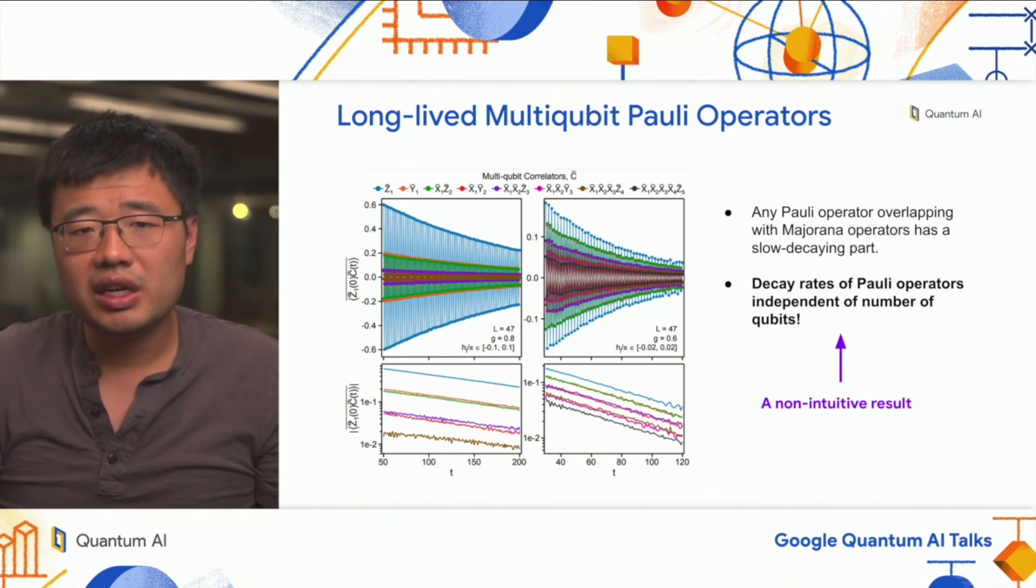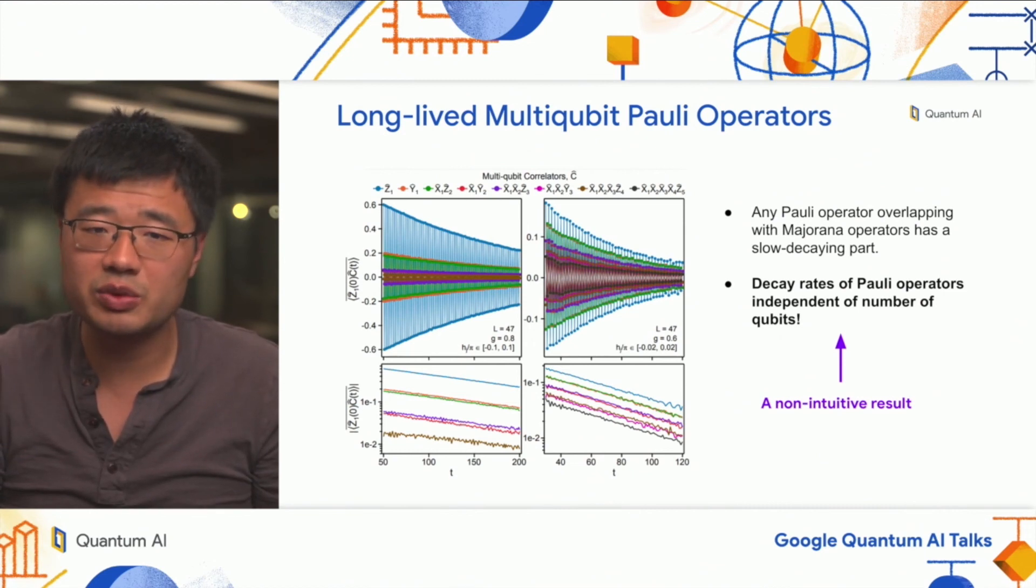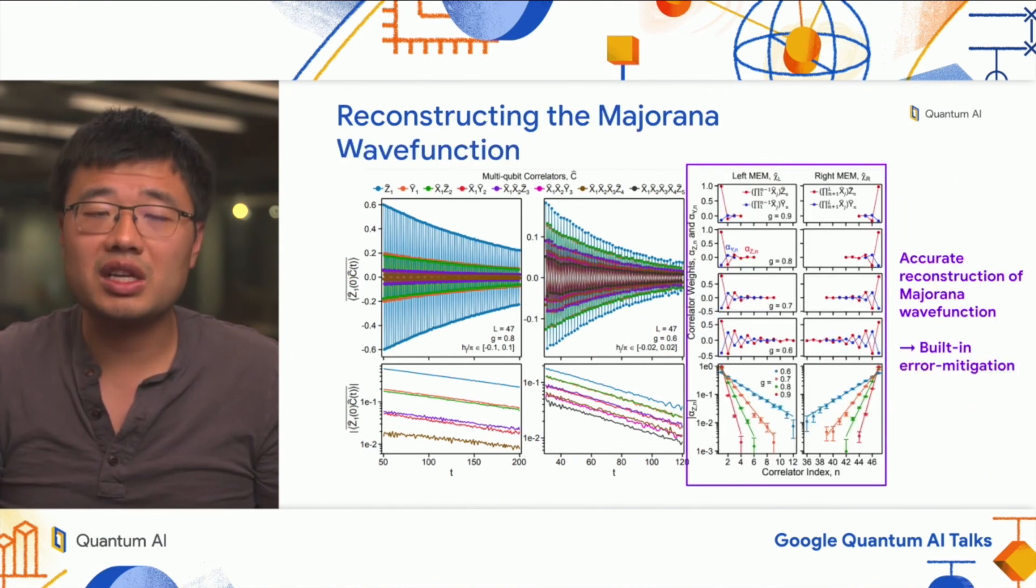The last thing I want to highlight is a striking observation where if you probe not just the local Z observables but higher Pauli terms—there are a family of eight multi-qubit Pauli operators which are all part of the Jordan-Wigner transformation of the Majorana edge mode—the late time behavior of these things is characterized by a single uniform decay rate. At the bottom, taking the absolute value and plotting them on log scale for late time behavior, you see the lines are basically parallel, meaning all these operators decay at exactly the same rate. This is highly non-intuitive because these operators have different numbers of qubits. Naively you would expect the decay rate to scale with the size of the operator, but here it's not.